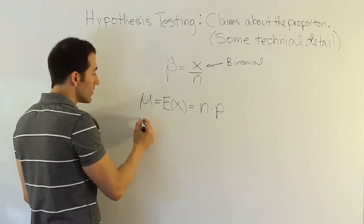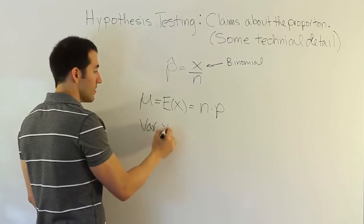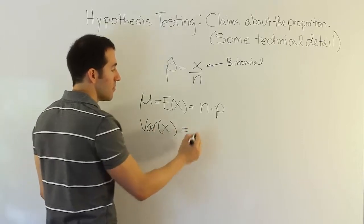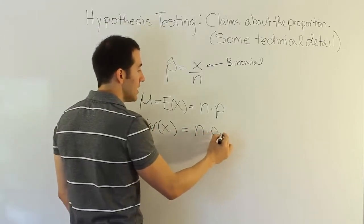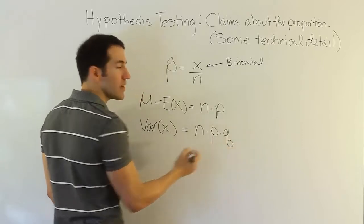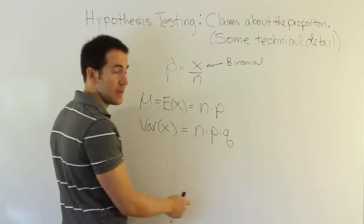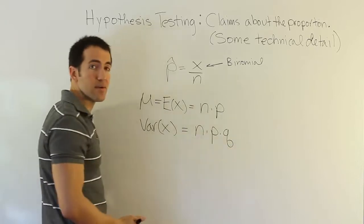And we also learned that the variance for x would be the same as n times p times q, where q is the complement of p. So if this one was 20, that's 80. If this one was 10, that's 90, so on and so forth.